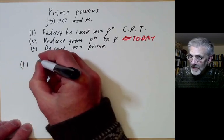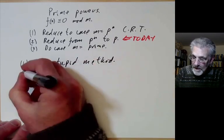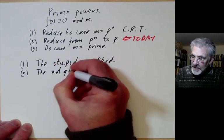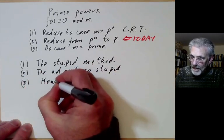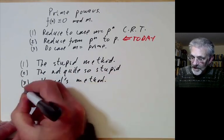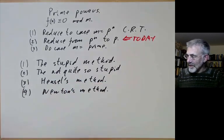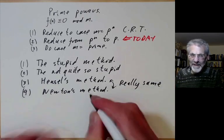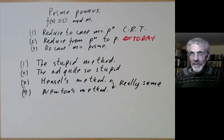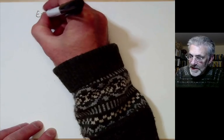We're going to discuss several methods for reducing from the case p^n to the case of p. The first is the stupid method, the second is the not-quite-so-stupid method, the third is essentially Hensel's lemma or Hensel's method, and the fourth is Newton's method. Actually, this is really only three methods, because Hensel's method and Newton's method are really the same — superficially they look different, but they're the same method.